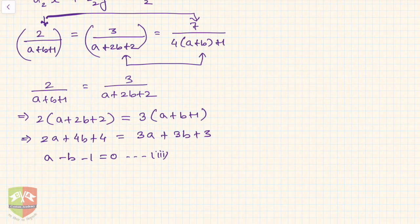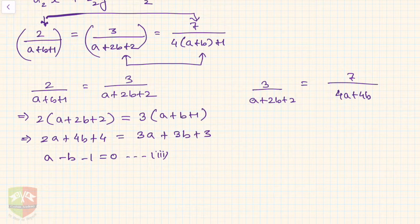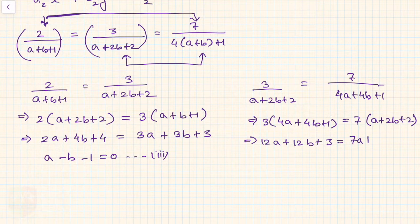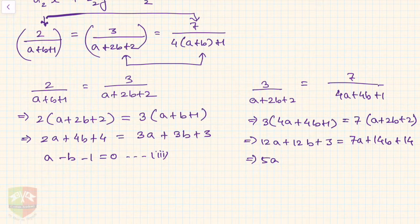Now equating the last two ratios: 3/(a + 2b + 2) = 7/(4a + 4b + 1). Cross-multiplying: 3(4a + 4b + 1) = 7(a + 2b + 2), giving 12a + 12b + 3 = 7a + 14b + 14. Simplifying: 5a − 2b − 11 = 0. This is equation 4.